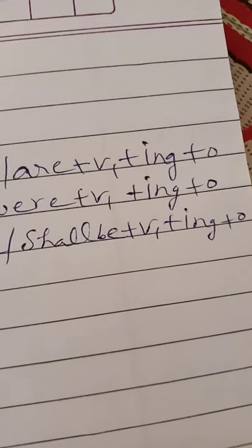We can call it progressive tense also. In present continuous tense, we have the formation: subject, is/am/are, verb first plus ing, then object.